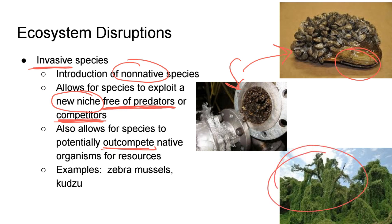Kudzu is an invasive climbing vine that grows very quickly, covers other trees and shrubs, and kills them through overshading. You see this in the South — Alabama, Mississippi, North Florida, Georgia — where it takes over buildings and everything else. Burmese pythons in the Everglades are another example, having almost completely wiped out the Florida panther population because they outcompete them.